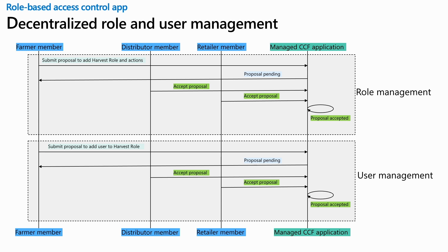The benefits of this governance-based approach are that it enables auditability and transparency and prevents unilateral changes to the application. Due to the immutability guaranteed by the underlying ledger, it is easy to audit the chronology of changes. Although this demo talks about a supply chain application involving external stakeholders, the concepts will equally apply to an application involving multiple internal stakeholders.